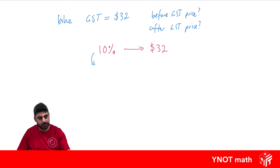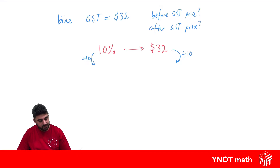To change the 10% into 1%, we divide it by 10, and we do the same thing to this side. 10 divided by 10 gives us our 1%, which is going to be really easy to deal with. And 32 divided by 10 — just move the decimal place one place this way — so we get $3.20.